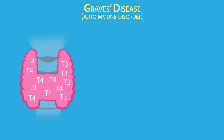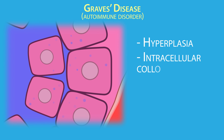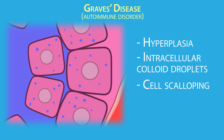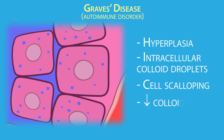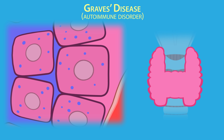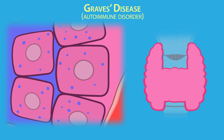The constitutive synthesis of T3 and T4 leads to follicular cell hyperplasia, the formation of intracellular colloid droplets, cell scalloping — characterized as a bulging of the follicular cell membrane — and reduced colloid space. All of these changes contribute to the enlargement of the thyroid gland, often referred to as a goiter.